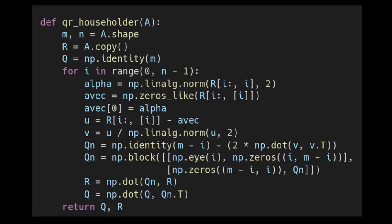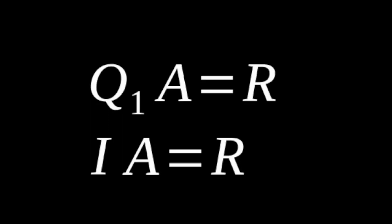This is the function I've written to compute a QR matrix decomposition through Householder transformations. In these first few lines, we're getting the shape of our A matrix, storing a copy of A as our R matrix, and setting our Q matrix — which will end up being the complete product of all QN matrices — but we're first setting it as our identity matrix.